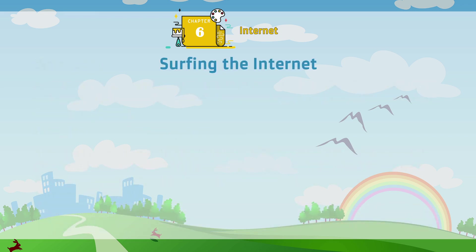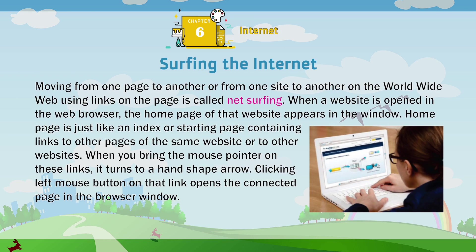Surfing the Internet: moving from one page to another or from one site to another on the World Wide Web using links on the page is called net surfing. When a website is opened in the web browser, the home page of that website appears in the window. Home page is just like an index or starting page containing links to other pages of the same website or to other websites. When you bring the mouse pointer on these links, it turns to a hand shape arrow. Clicking the left mouse button on that link opens the connected page in the browser window.